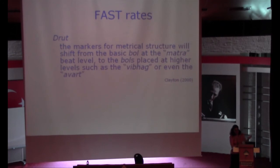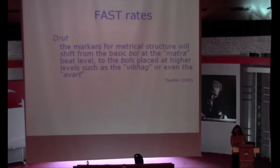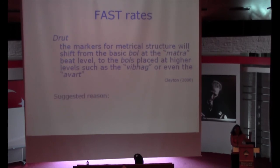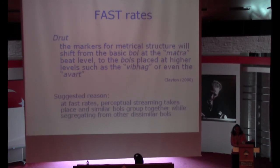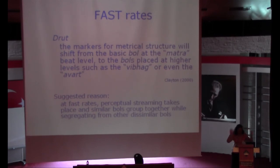On the other end of the speed spectrum, in the fast states — the drut — we get into primitive aspects of auditory scene analysis. At very fast speeds, the metrical structure shifts from the basic matra level to the vibhag level — the beginnings of the larger sections, or even the entire cycle itself. The reason I've suggested is that perceptual segregation kicks in. When sequences are going that fast, the timbre similarities become handles — they pull out and give you a scaffold to maintain the rhythm at those fast speeds.